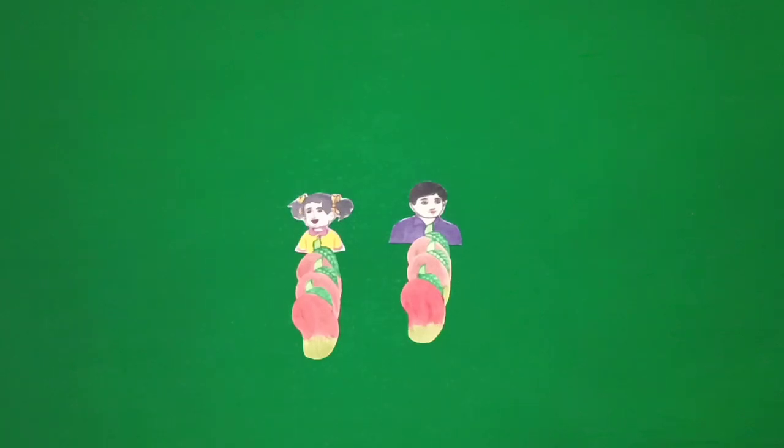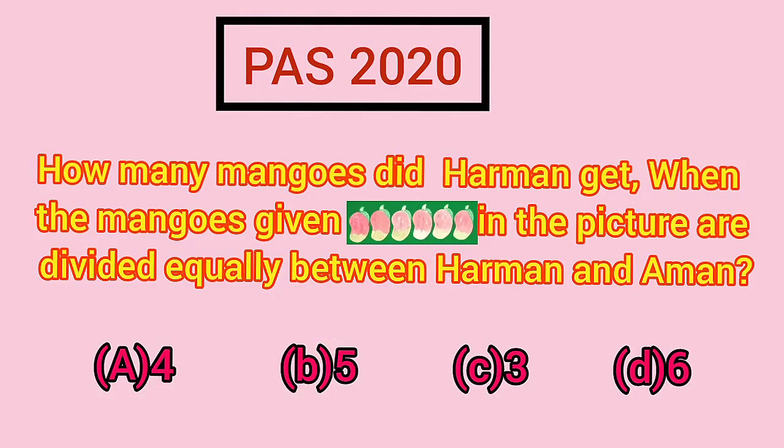Students, look how many mangoes did Harman get? Yes, Harman got 3 mangoes. It means C option is correct.